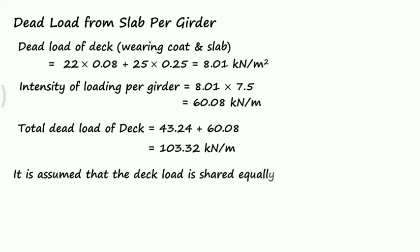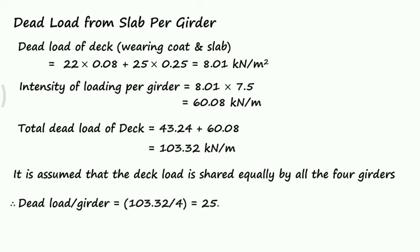It is assumed that the deck load is shared equally by all four girders. Therefore, the dead load per girder is 25.83 kN/m.